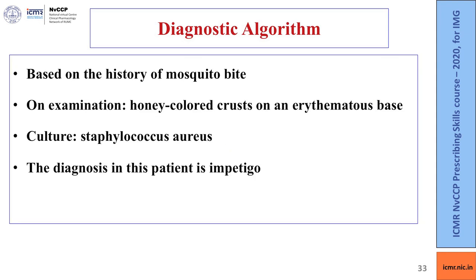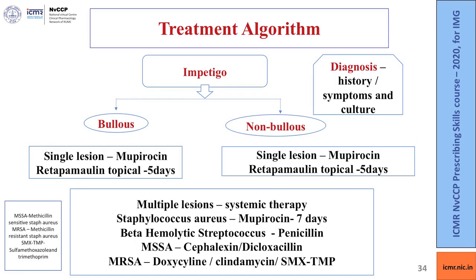In this case, based on the history of mosquito bite, honey-colored crust on an erythematous base, and Staph aureus on culture, the diagnosis is impetigo. Impetigo can be bullous or non-bullous. For a single lesion, topical mupirocin or retapamulin is given for five days. For multiple lesions, systemic therapy is preferred. For Staph aureus, mupirocin is given for seven days. For beta-hemolytic streptococci, injection penicillin is used. For methicillin-sensitive Staph aureus, cefalexin or dicloxacillin is given.